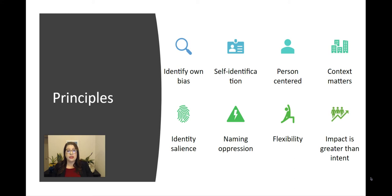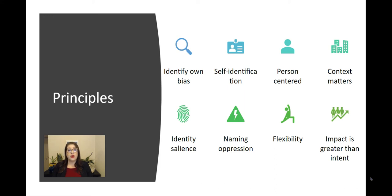We want to make sure that we're naming the perpetrators of oppression and that oppressive force when we're choosing language. This can look very simply like using 'minoritized' instead of 'minority.' Minority reflects a diminishing of a community and makes it sound like it might even be a small community. Minoritized reflects the history and the structures and the policies that have actually led to thinking about people in terms of numerical majority, and it reflects the fact that that was done to communities and not chosen by communities.